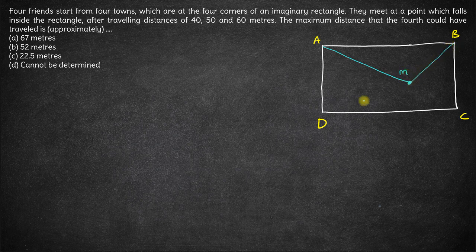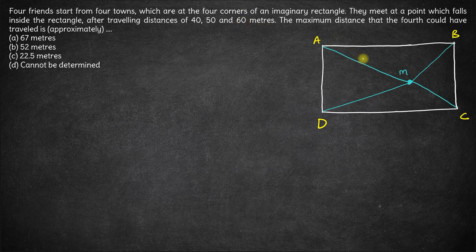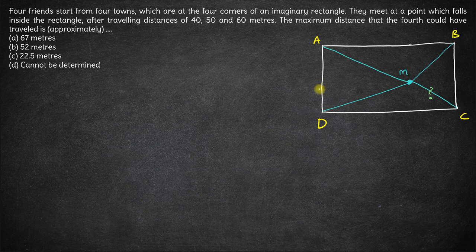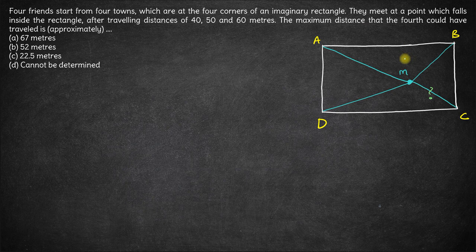One person goes from B to M, another from D to M, and another from C to M. After travelling distances of 40, 50, and 60 metres — so let's say this is 40, this is 50, this is 60, and this is the unknown distance. The question is: what is the maximum distance the fourth person could have travelled? There is only one possibility for the distance the fourth person could travel.